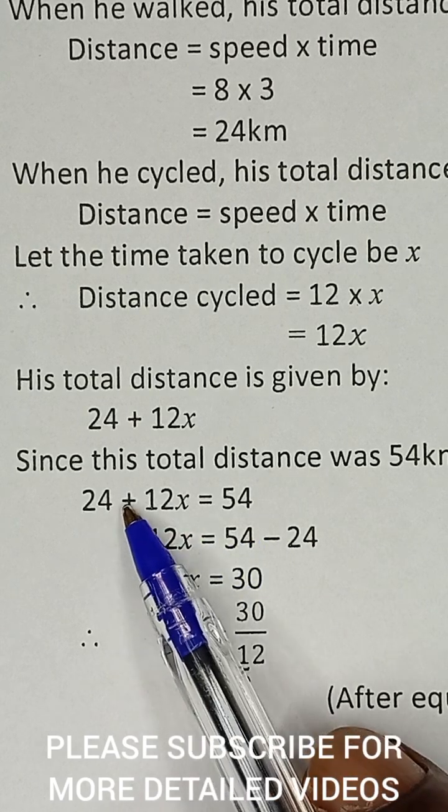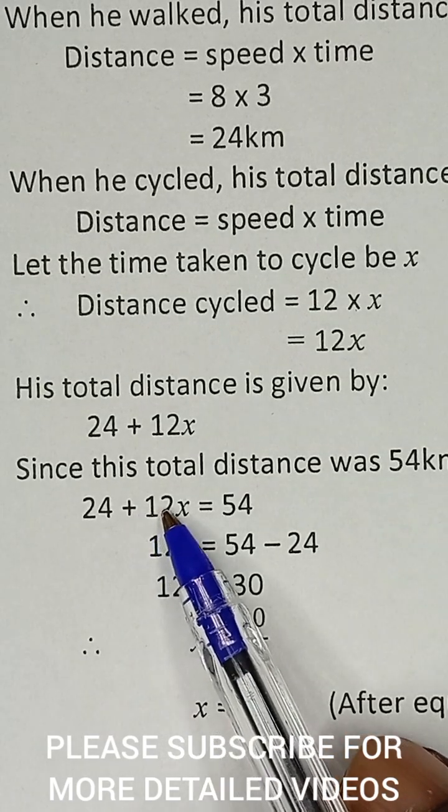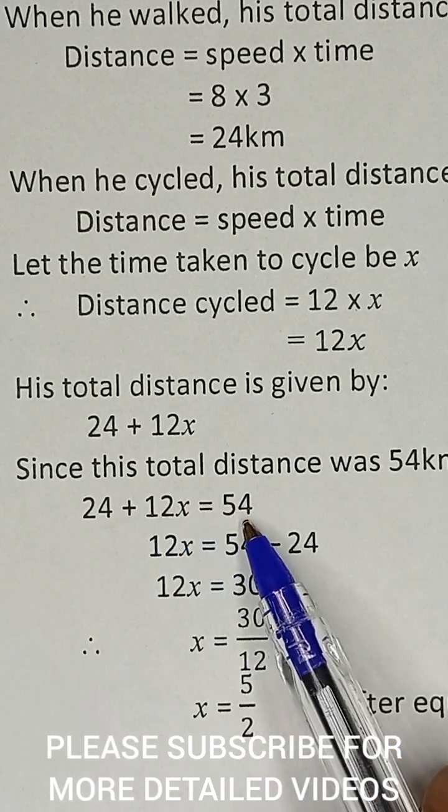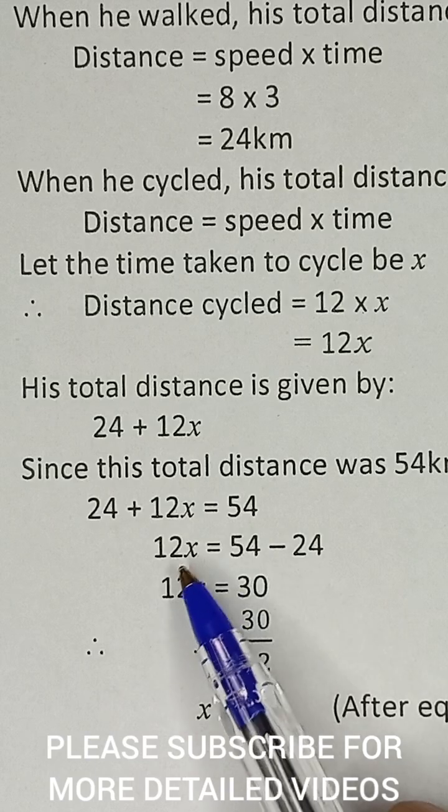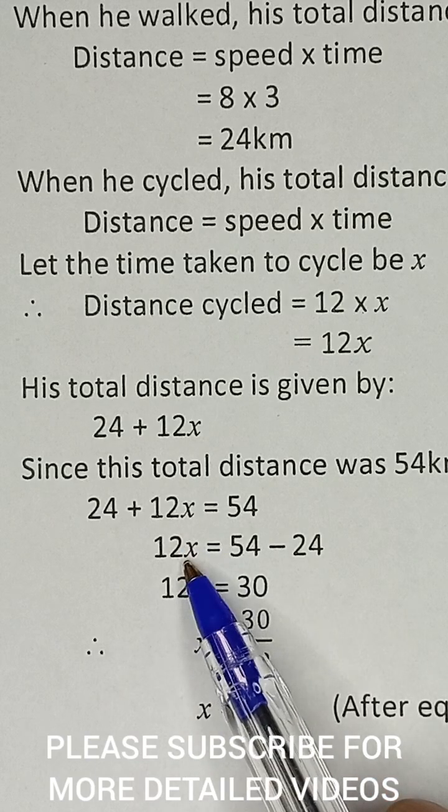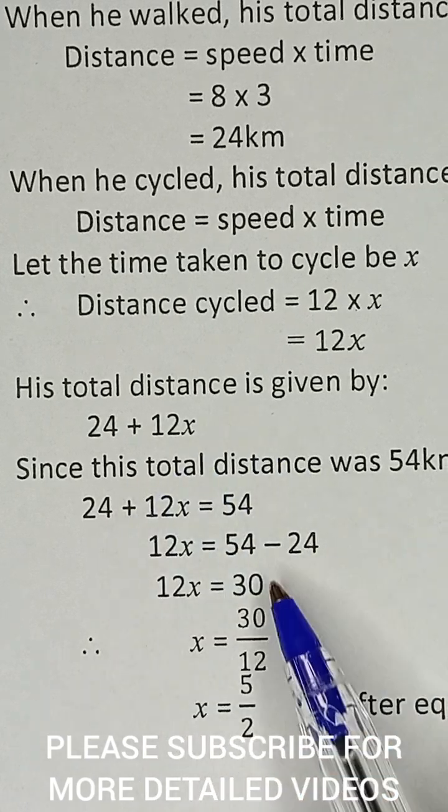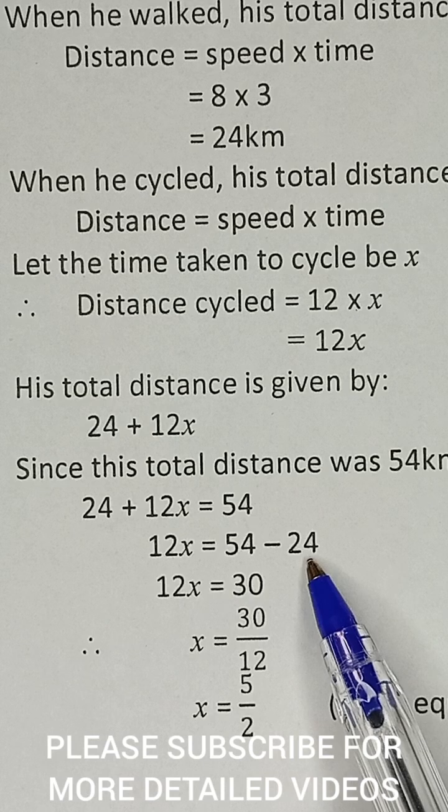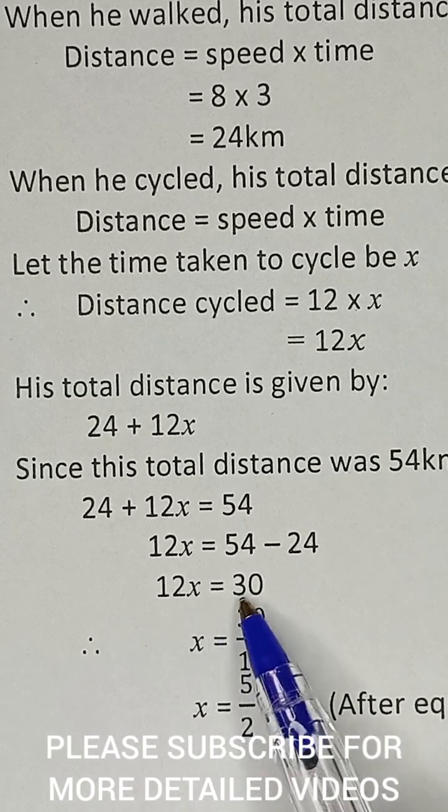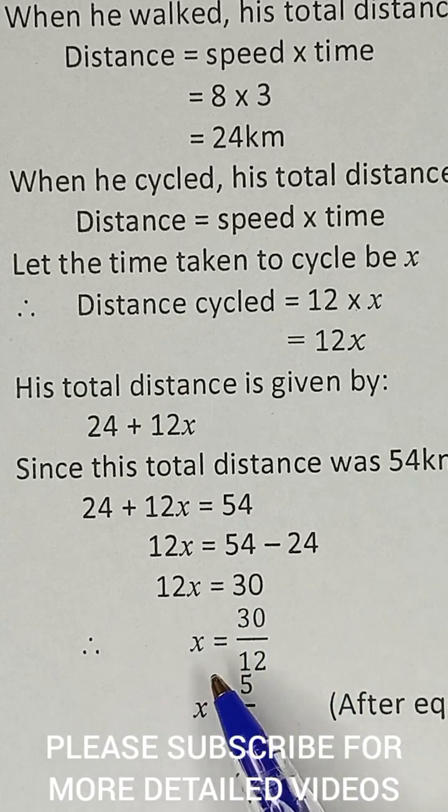12x stays on this side, 24 goes to that side and becomes negative. So we have 12x equals 54 minus 24, which gives us 12x equals 30.